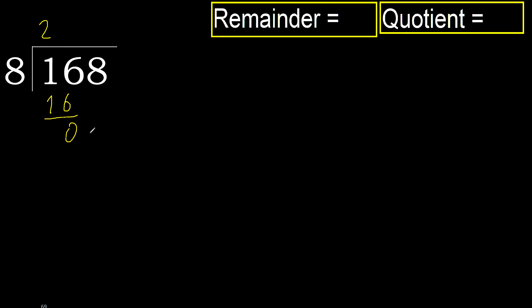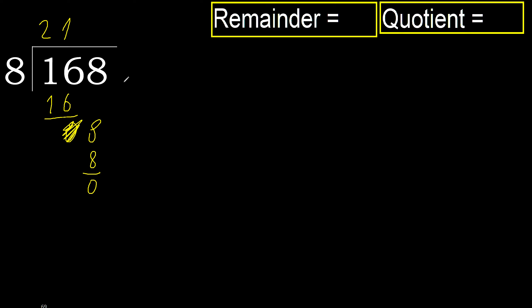Next, eliminate 0 on this side, bring down 8. 8 multiplied by 1 is 8, it's not greater. 8 minus 8 equals 0. Next, there is no number, therefore finish it.